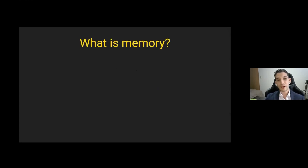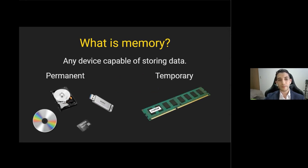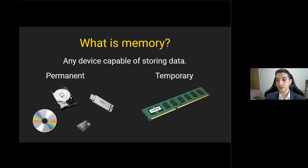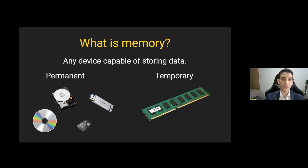Before we go into how JavaScript memory works, I would like to take a couple minutes to talk about what memory is and what it means to manage it. Memory is any physical device capable of storing information permanently or temporarily. Memory comes in all forms, shapes, and formats — we have hard drives, USB drives, memory cards, CDs, ROM, and RAM. In the context of memory management, when we refer to memory, we mean RAM.